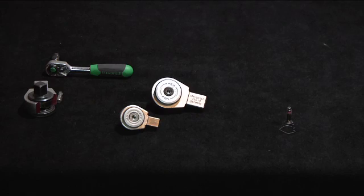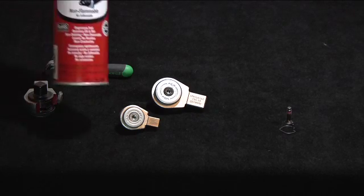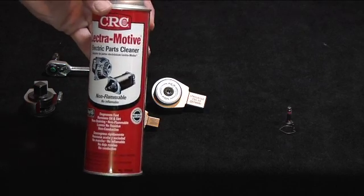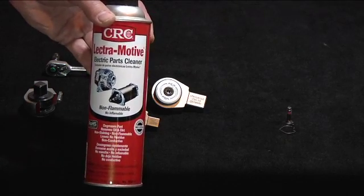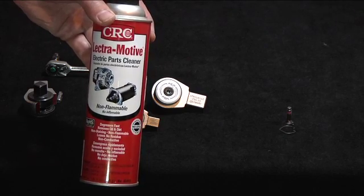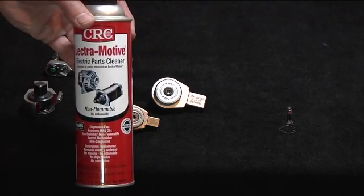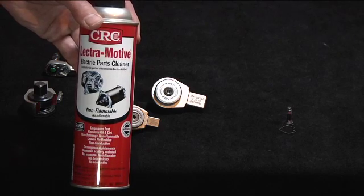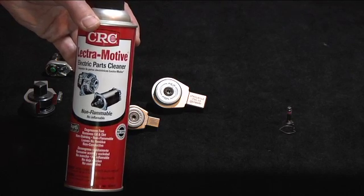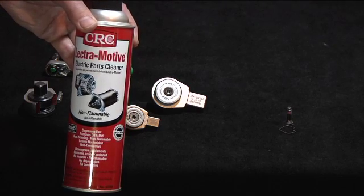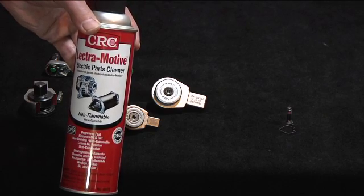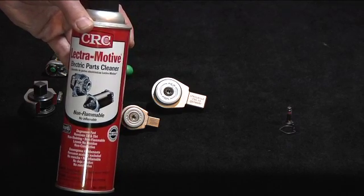Things we need before we get started: paper towels, three-in-one oil, and some sort of cleaning solution that does not leave a residue. We're pretty fond of the CRC Electromotive stuff because it dries absolutely dry and there's no residue left behind, and it cleans like crazy. You could use brake clean or carburetor cleaner, but something that's not going to leave a residue is critical.